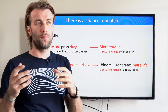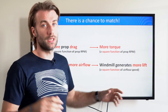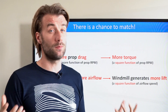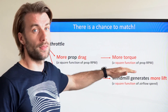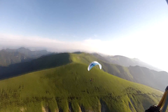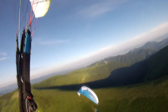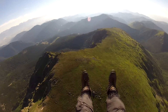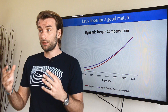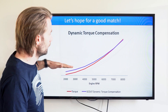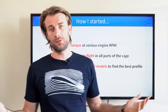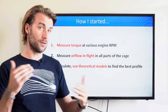The key insight is that both the torque effect and the compensation from the windmill built inside the cage are aerodynamic effects. Both are based on the same aerodynamic principles and are both square functions of prop RPM and airflow speed. My goal was to build a windmill into the cage and design the profile, size, and everything so that the compensating force would increase at the same pace and rate as the increase of torque. The first thing I had to do was measure the actual torque at various RPM on the engine.